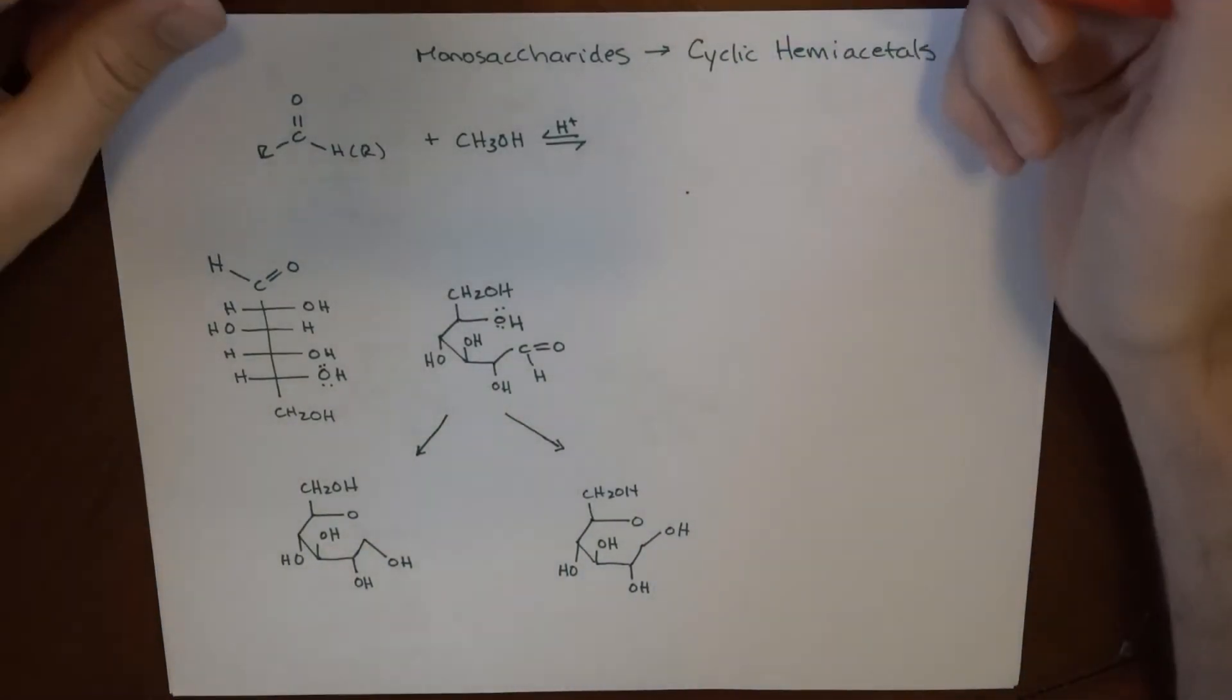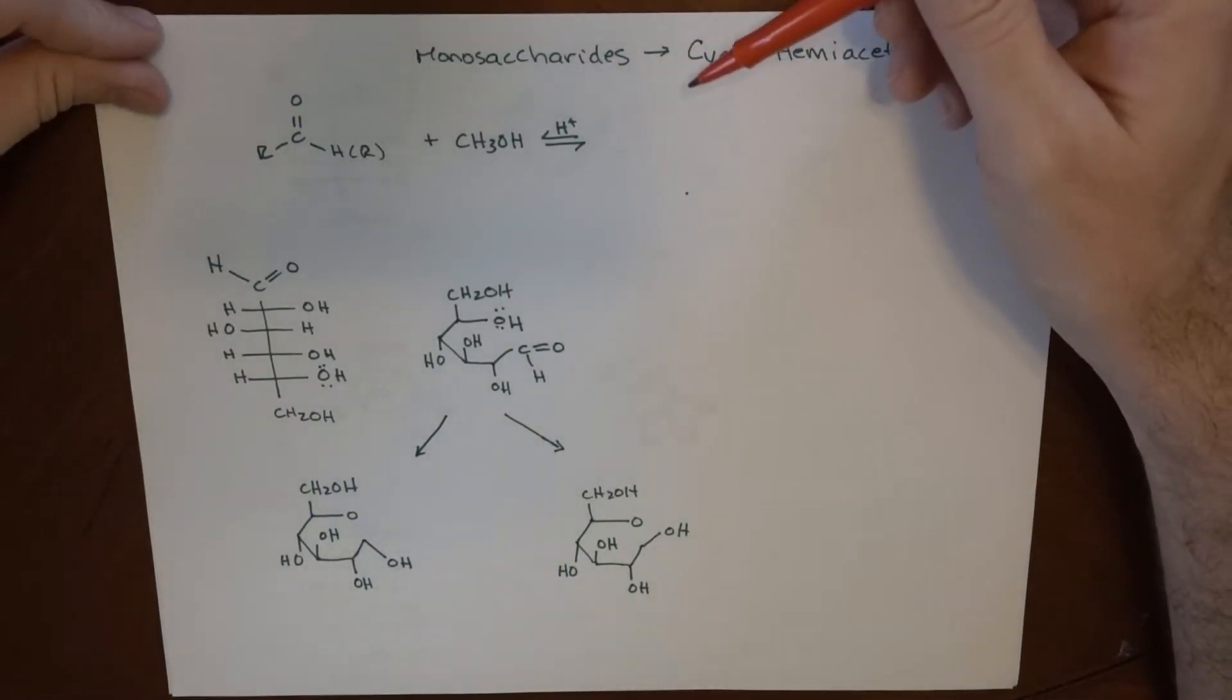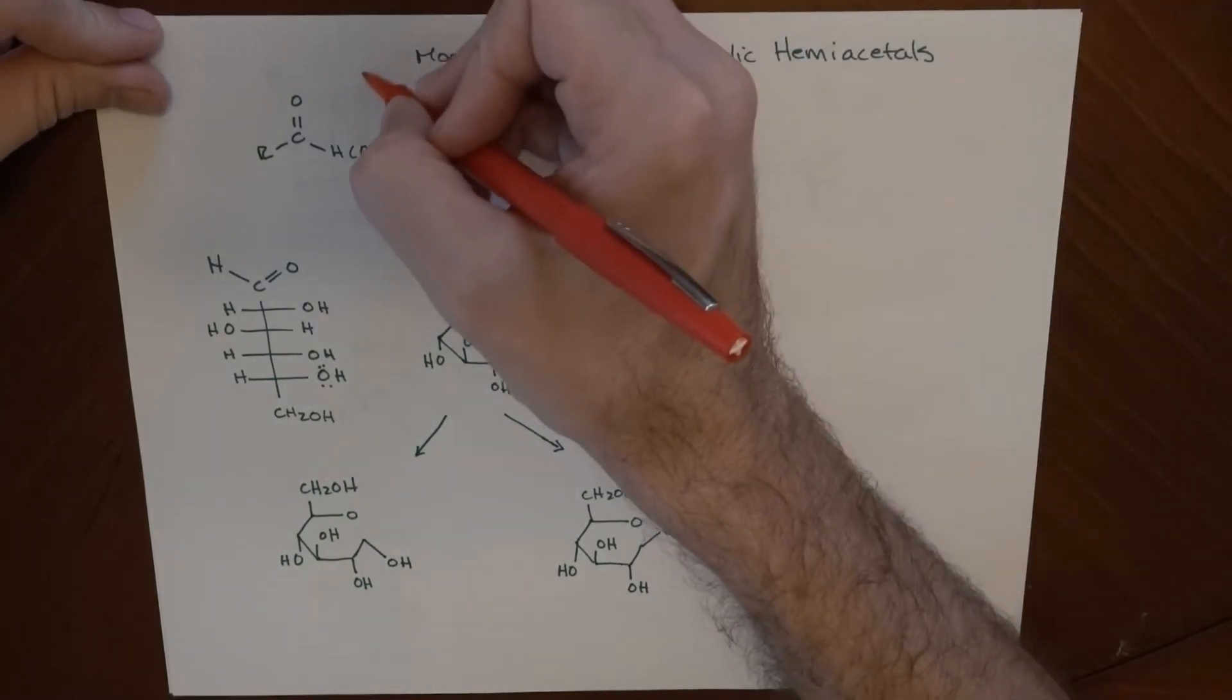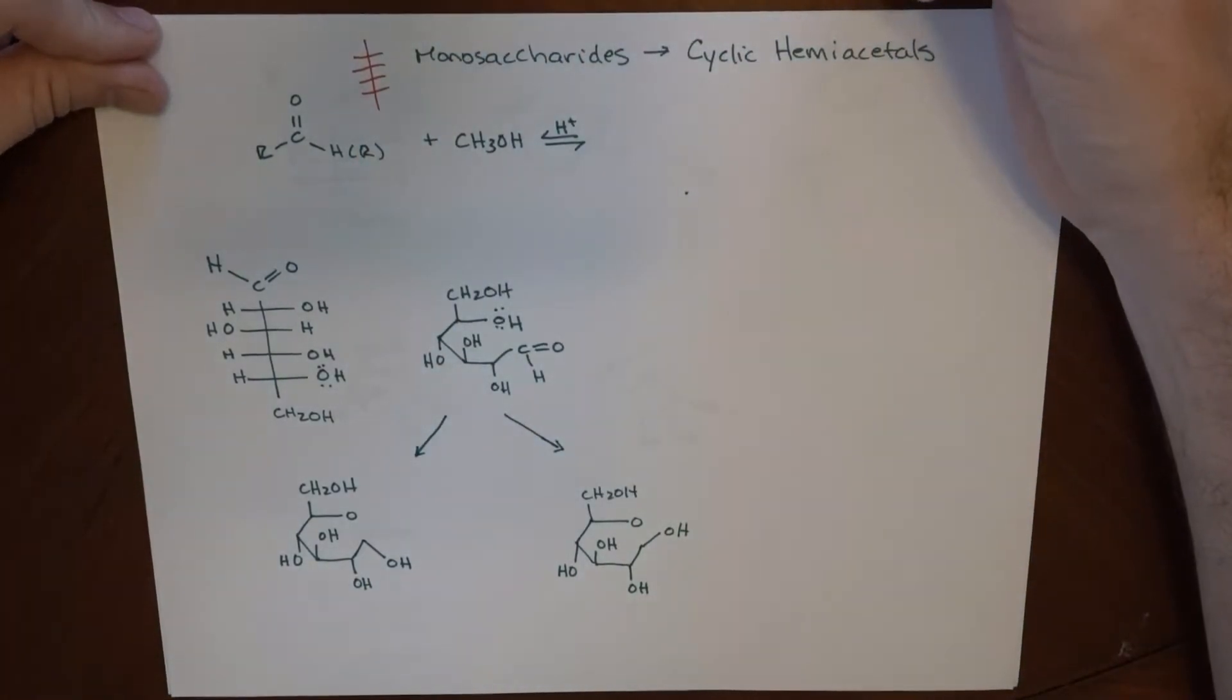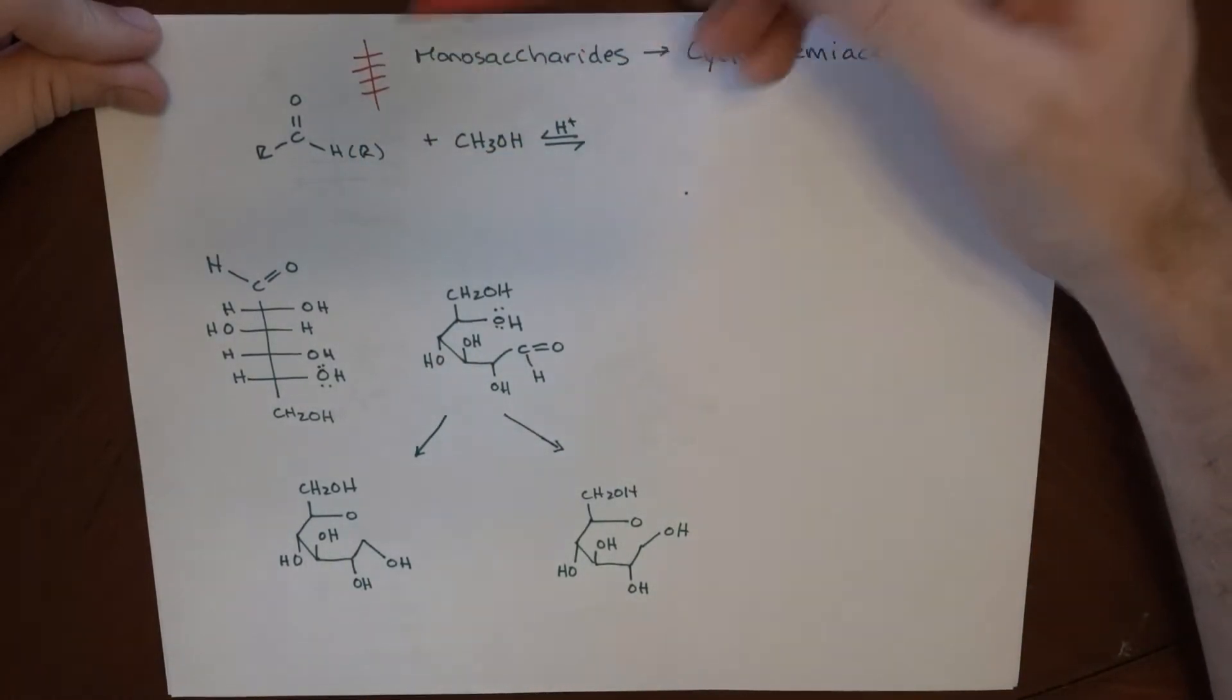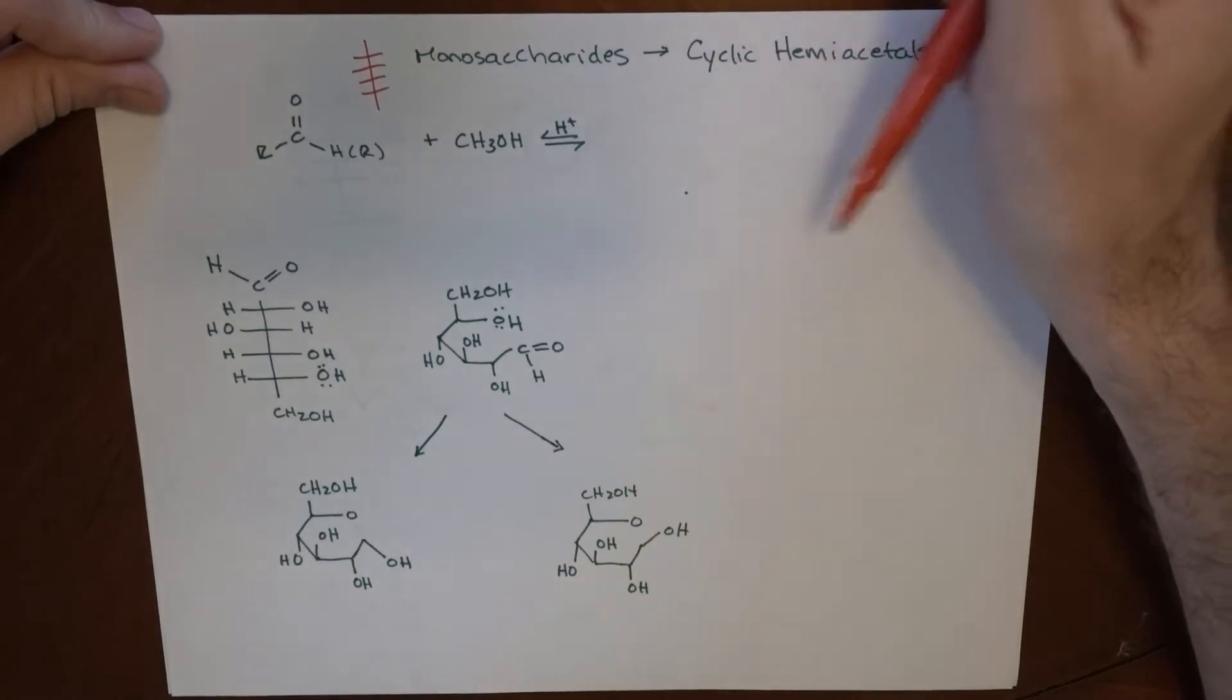So here's a reaction that can take place. We're going to use monosaccharides and show how they can be cyclic in all of the different ways we've been looking at them so far. They're these sort of long molecules that are linear and straight, but we're going to show how they can become cyclic.